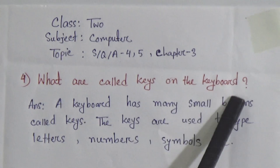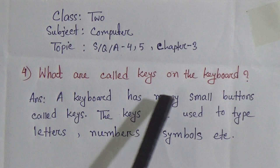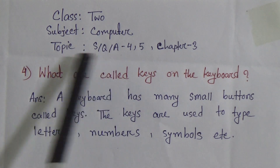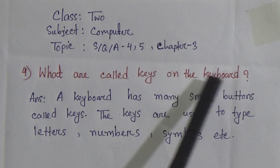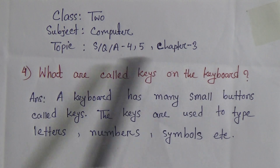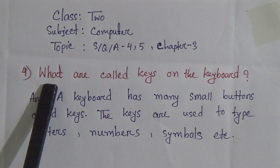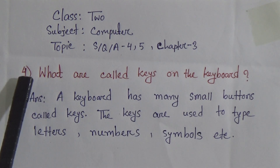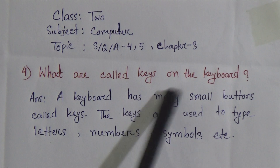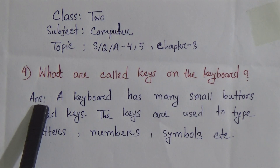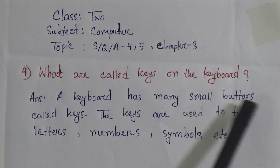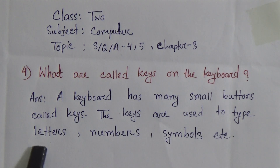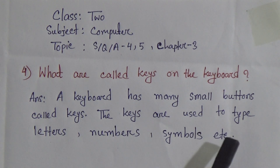We know that the title of this chapter is keyboard, so we know about the keyboard and different types of keys on the keyboard. Today's question number 4: what are called keys on the keyboard? Answer: a keyboard has many small buttons called keys. The keys are used to type letters, numbers, symbols, etc.